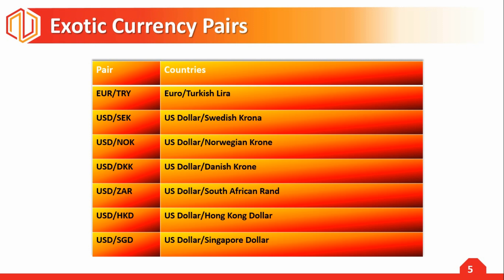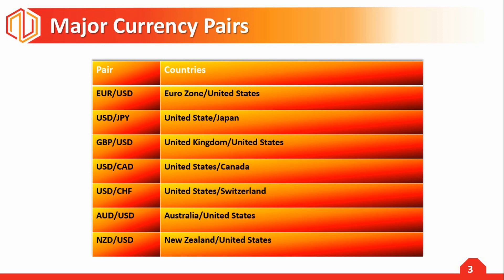Going through the exotic pairs list: euro against the Turkish lira, US dollar against the Swedish krona, US dollar against the Norwegian krona, US dollar against the Danish krona, US dollar against the South African rand, the dollar against the Hong Kong dollar, and the US dollar against the Singapore dollar. These are the exotic currency pairs.